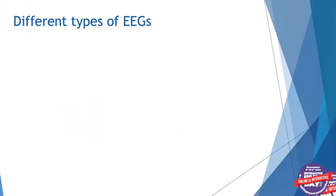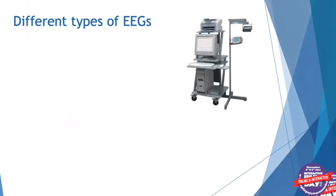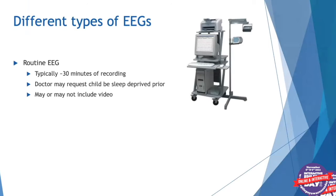There are different types of EEGs that we typically order. A routine EEG is what's most commonly ordered — it's usually about 30 minutes of recording. The doctor may request that your child be sleep deprived the evening before. It may or may not include video; since it's a brief procedure, sometimes we just look at the brain waves, but some also include video.